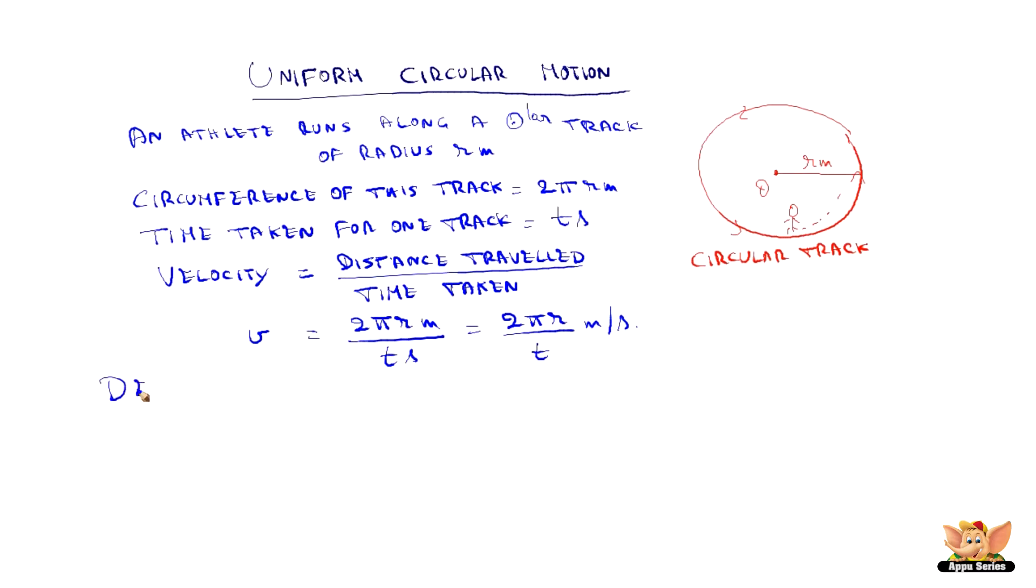Hence, we can define the circular motion as when an object moves in a circular path with uniform speed, the motion is called uniform circular motion.